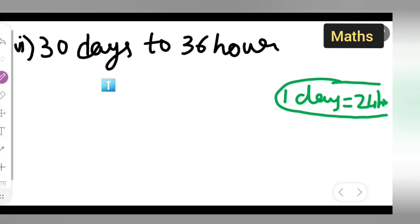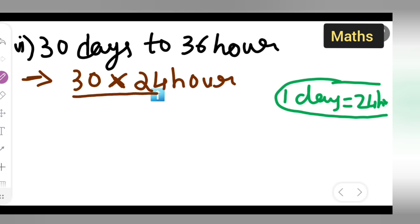I'll write down 30 multiplied by 24 hours. For 30 days, we multiply 30 by 24 hours to get the total hours. This is over 36 hours, which is already given in hours.